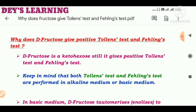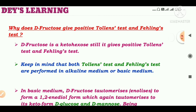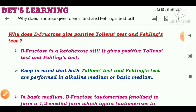Hello guys, welcome to this learning. Today we are going to talk about a very interesting question about the bio-molecules chapter. The question is: why does D-fructose give a positive Tollens' test and Fehling's test? To find out the answer to this question, we have to recapitulate some of our previous knowledge regarding this topic.